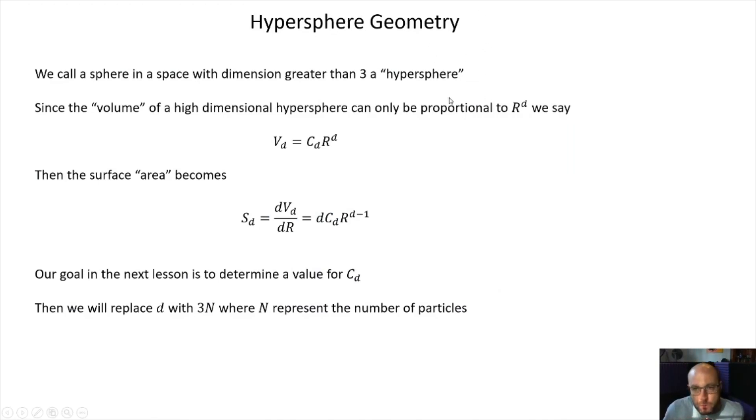So when the dimension is bigger than three, we call the spherical shape a hypersphere. Again, by symmetry, the volume of a hypersphere of dimension d can only be proportional to R^d. So again, that's by symmetry and by, I suppose, even dimensional analysis could be an argument in favor of this. But then we don't know the proportionality constant. Once we know the proportionality constant, we're ready to go. We can get the surface area. We can get the multiplicities that we need.